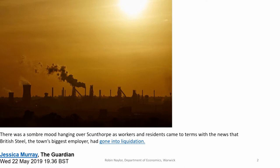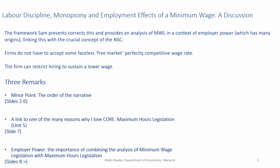This is Scunthorpe, from the Guardian newspaper — a company town with steelworks closing. The framework Sam's presenting corrects the whole idea of free markets with employers as wage takers, and provides an analysis of minimum wage legislation in the context of employer power, linking it crucially to the labour discipline model which is so central to how we do things in CORE. Firms are not facing a perfectly competitive market clearing wage rate — the firm restricts hiring to sustain a lower wage. I want to make three remarks. The first is a relatively minor point about the order of the narrative in Sam's teaching note.